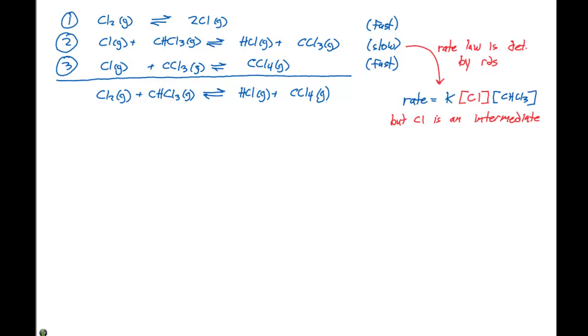In the previous video we looked at the following three-step mechanism. That three-step mechanism gives rise to the overall equation of Cl2 gas plus CHCl3 gas in equilibrium with HCl gas plus CCl4 gas.